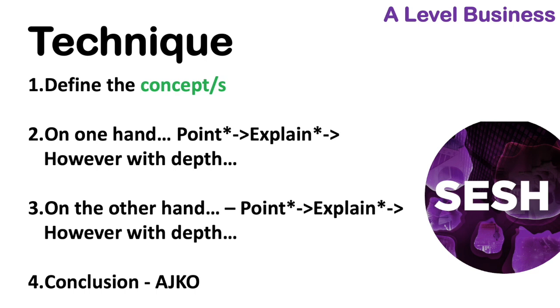Looking at technique, here is a suggested structure that you could use. Firstly, define the concept or concepts in the question. Then you want to look at both sides of the argument. So you take one side of the argument first, and you could start with on one hand to signal to the examiner that's what you're going to do. Then explain your initial point in context, and then explain it in full in context to the business or the industry.